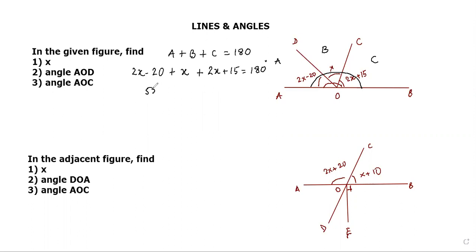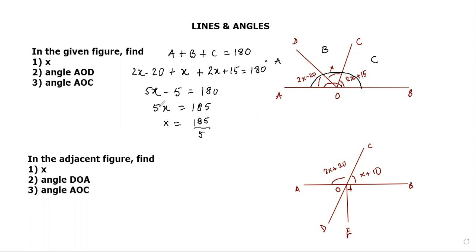Clubbing the variable terms: 2x + x + 2x = 5x. For the constants: −20 + 50 − 30... giving 5x − 5 = 180, so 5x = 185. Therefore x = 185 ÷ 5 = 37 degrees.